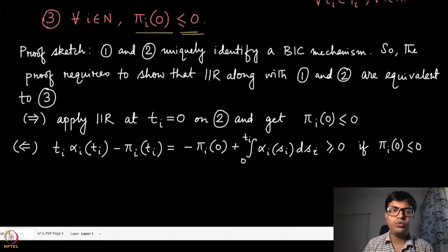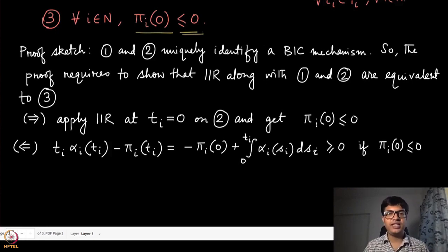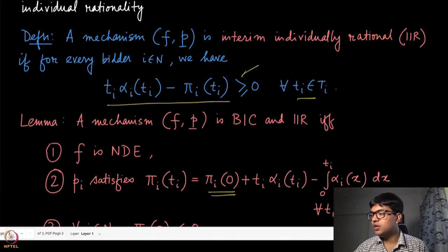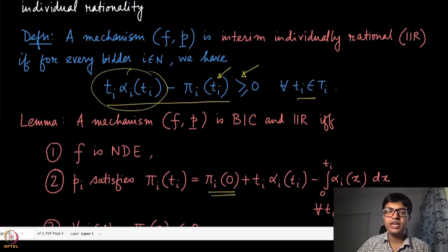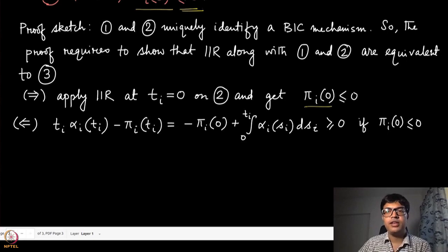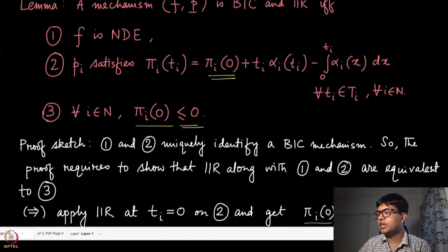Conditions one and two are equivalent to BIC. What remains to prove is that IIR combined with conditions one and two is equivalent to condition three. In the forward direction: assuming IIR with conditions one and two, we plug t_i = 0 into the utility expression. The allocation term vanishes, leaving that -π_i(0) ≥ 0, which means π_i(0) must be non-positive. That is straightforward, as we did in the prior-free case.